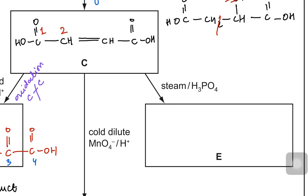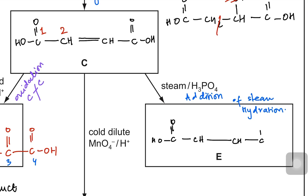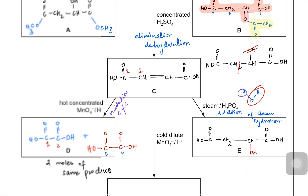Let's go towards option E. You can see that steam and phosphoric acid are added — we call it addition of steam, or hydration — it's the opposite of dehydration. The overall structure remains the same, but the double bond should be gone. From the steam, the OH will go on one carbon and the H will go on the other side, so instead of writing another H I can make it H₂. This is your molecule prepared.